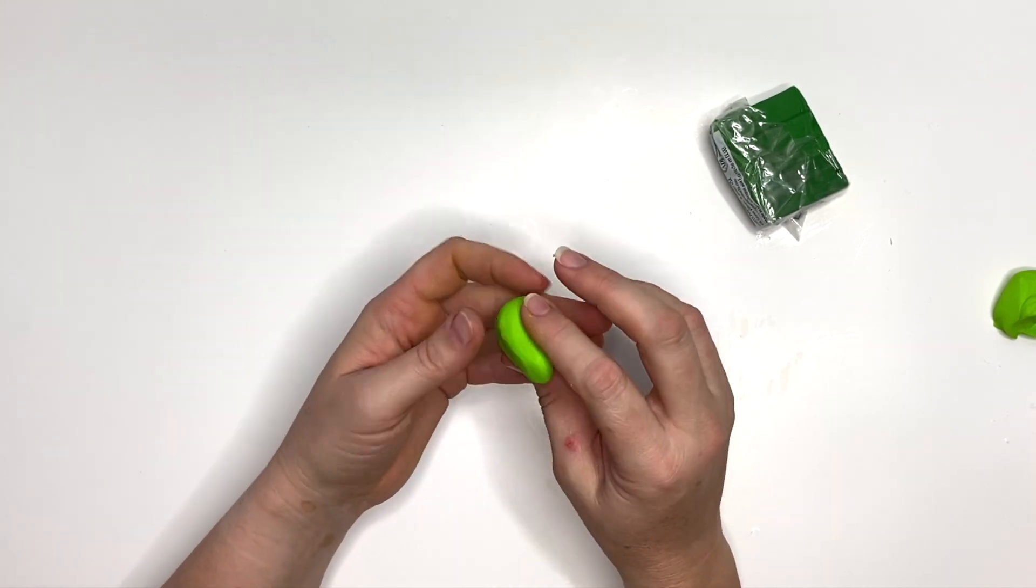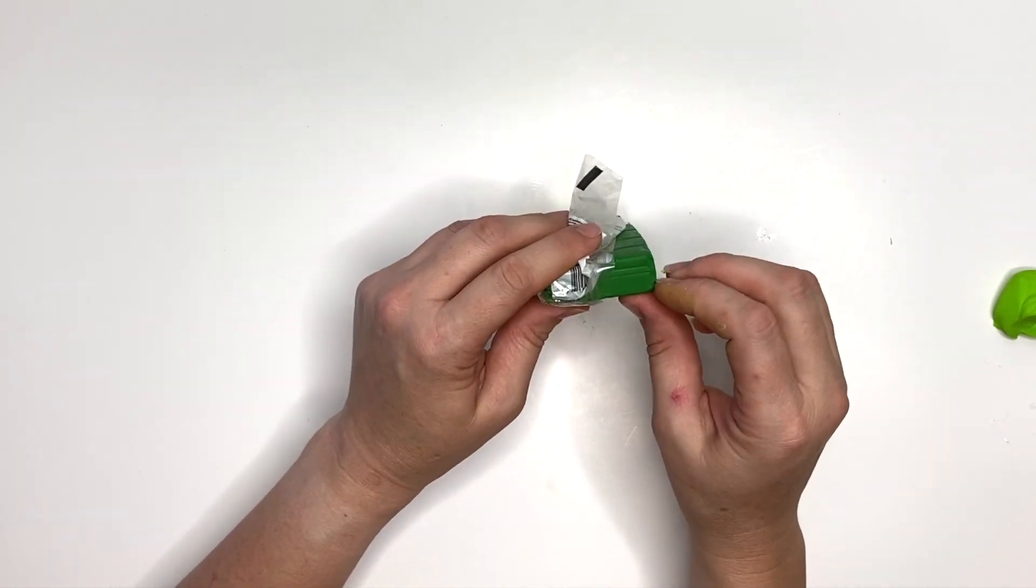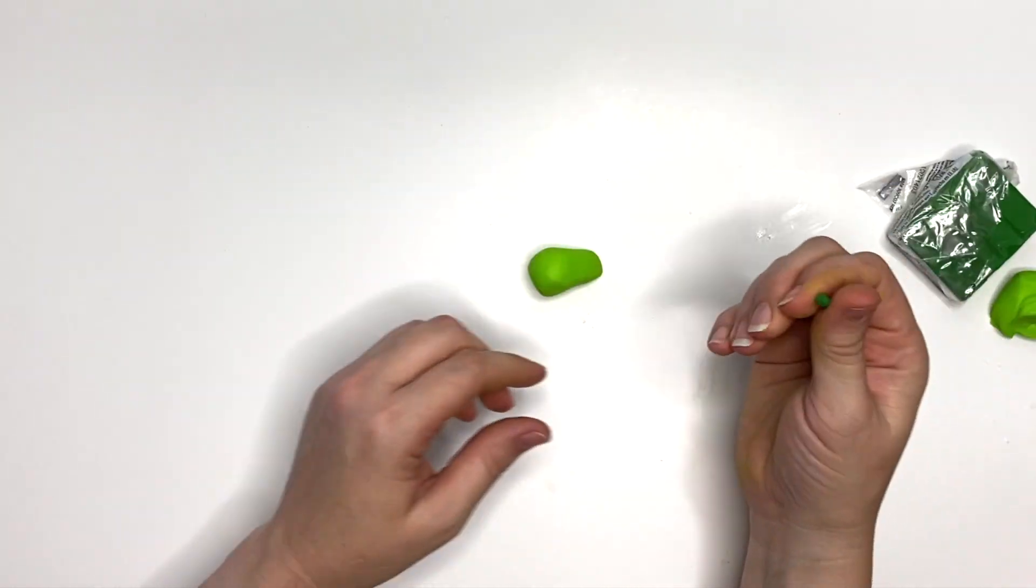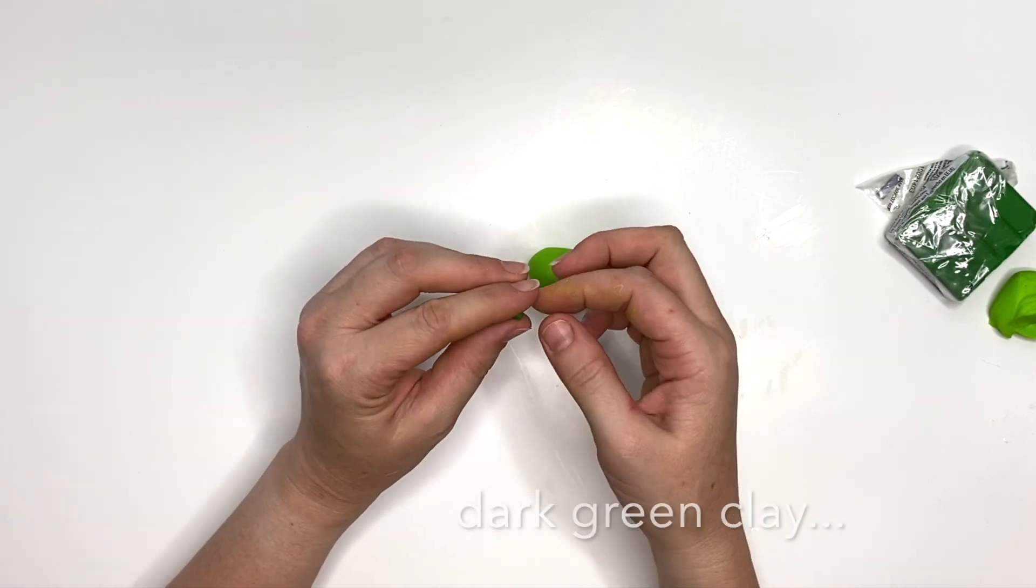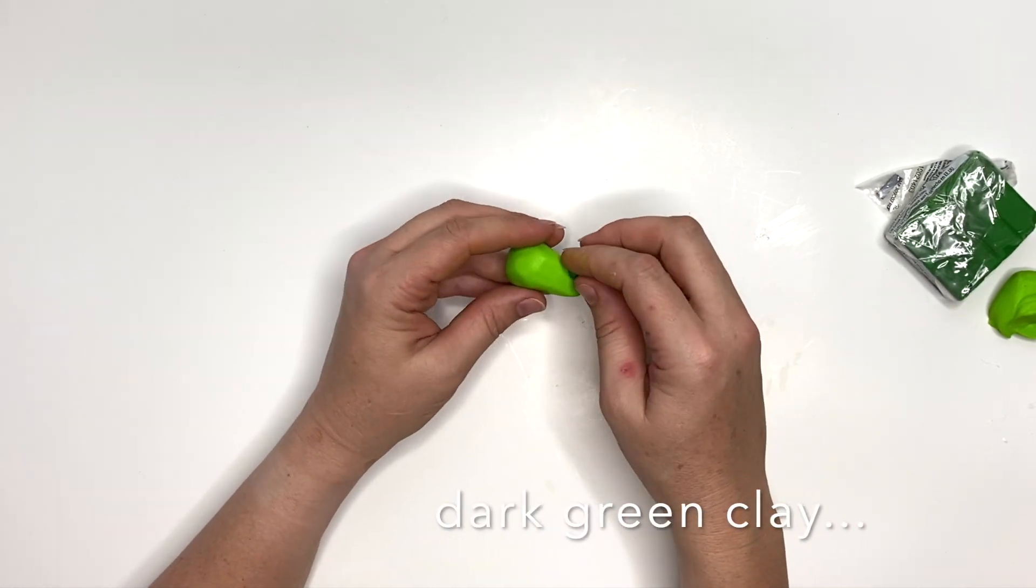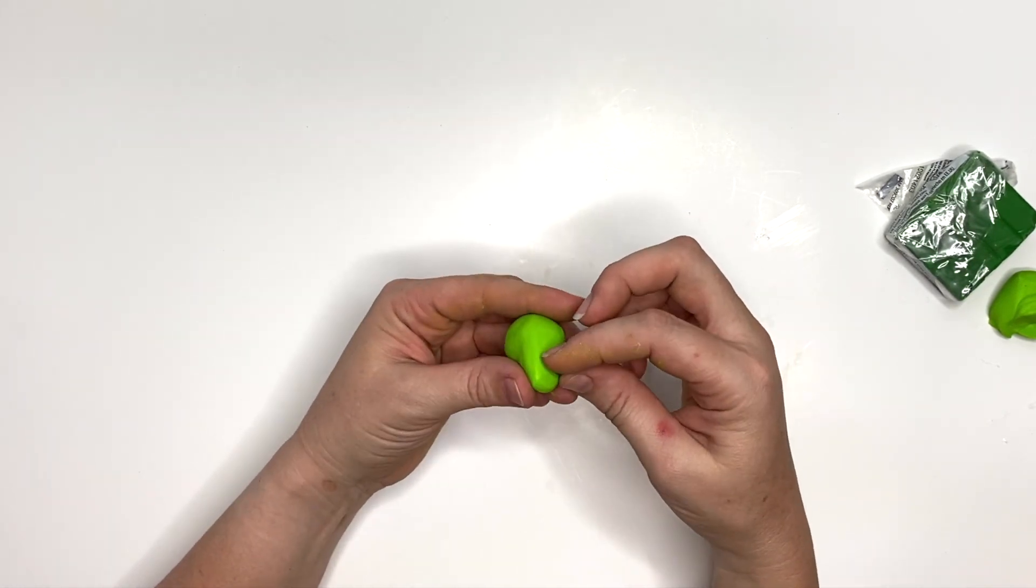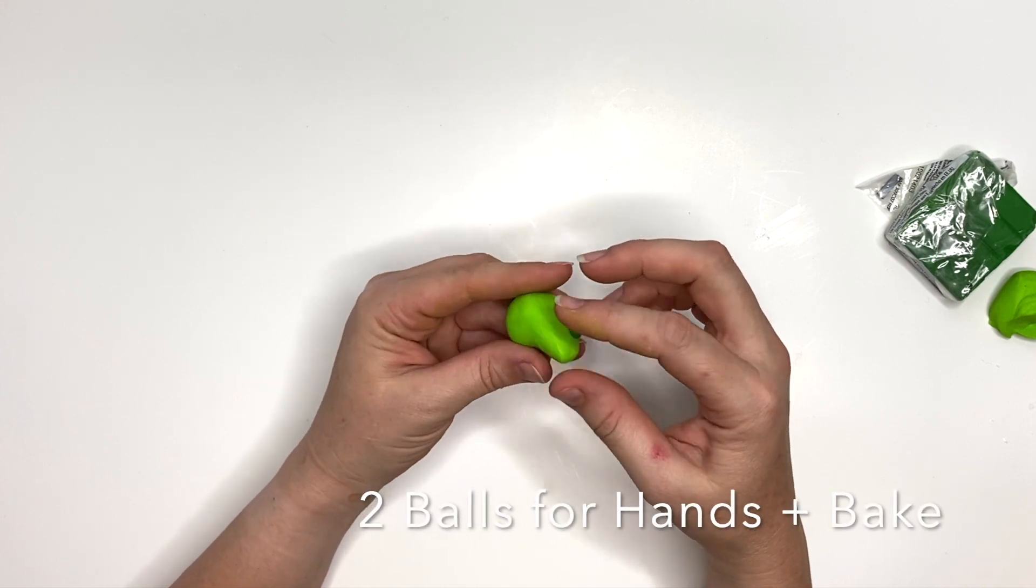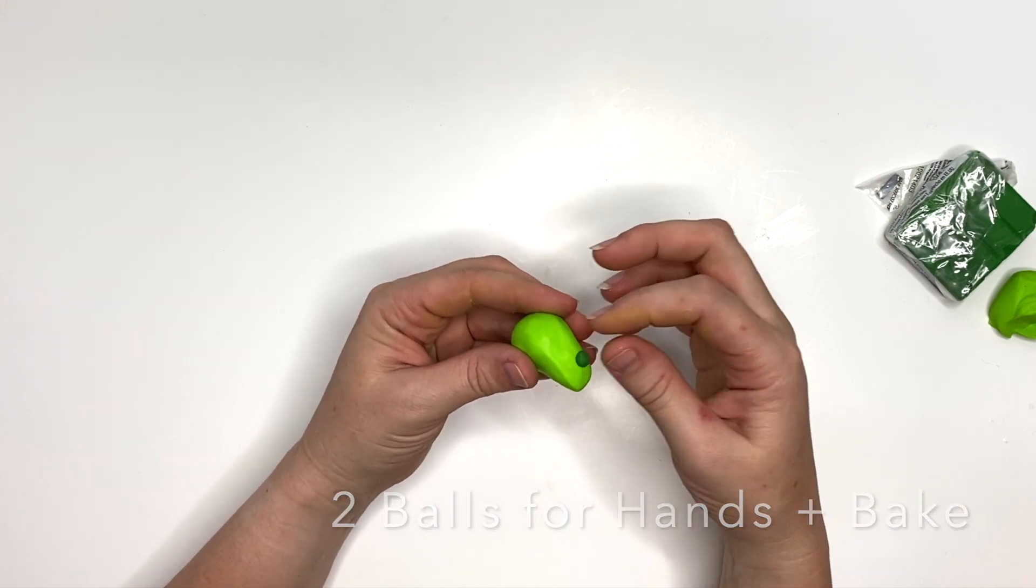Based on whatever size gnome you'd like to make, you can make this after your gnome body is created. I used a teeny tiny bit of dark green but you can use purple or whatever, and I gave her a nice ugly wart. We're also going to make two small balls for the hands and then we're gonna bake that and let it cool completely.